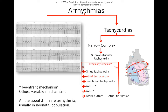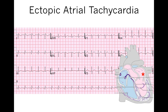Moving on to atrial tachycardia. Normally the electrical impulses originate in the sinus node, but if a different part of the atria takes over — for example, the pulmonary veins and back of the left atrium are common causes — those cells can start depolarizing at a faster rate than the sinus node, suppressing the sinus node and taking over the rhythm. A P-wave that is negative in leads 1 and 2 is not coming from the sinus node; this is an ectopic atrial tachycardia.